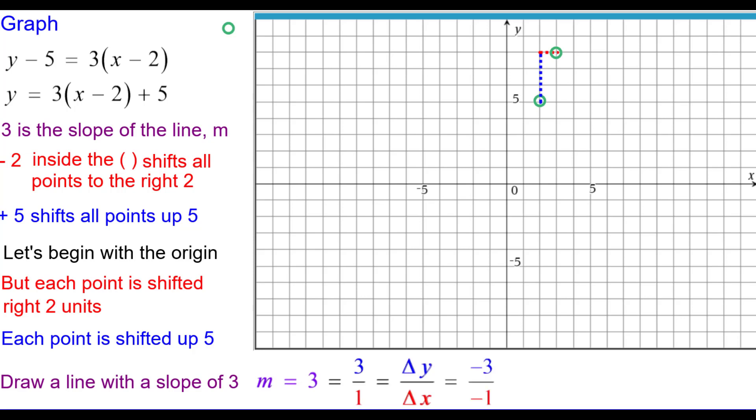We can also think of this as negative 3 divided by negative 1 with a change of y of negative 3 or down 3, and a change of x of negative 1 or left 1. And that will be our third point.